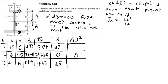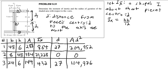The AD squared for piece two is zero. For piece one: 27 squared times 288 equals 209,952. For piece three: 27 squared times 144 equals 104,976. These two columns — I_x-bar and AD squared — will simply be added together to get our final moment of inertia.